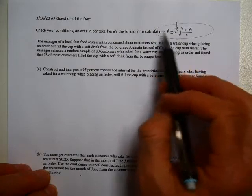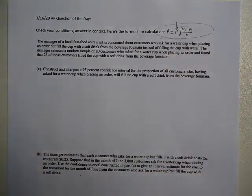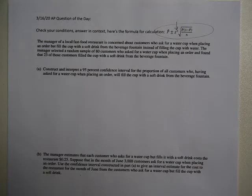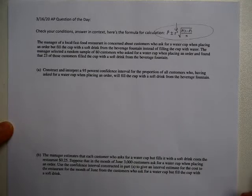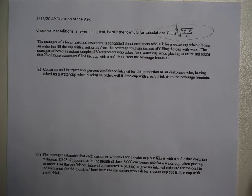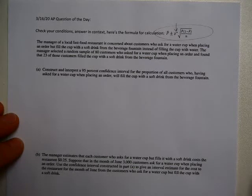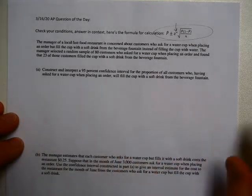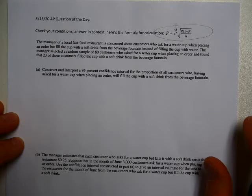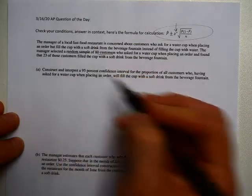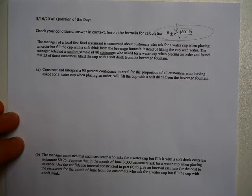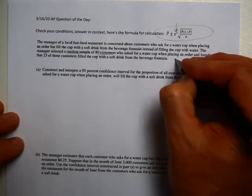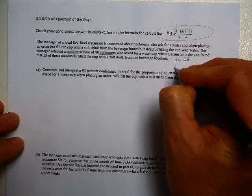I've given you a bit of a heads up here with the formula for this. These questions I attempted to choose would not require the TI-84 to solve, so they might be considered a little bit on the easier side of things, but they are still a former AP test question, so they're still good review. We've got a manager at a fast food restaurant worrying about water cups being filled with soda. He does a random sample of 80 customers who asked for a water cup and found that 23 filled the cup with soft drink instead of water. So that's going to be x is 23 and n is 80.